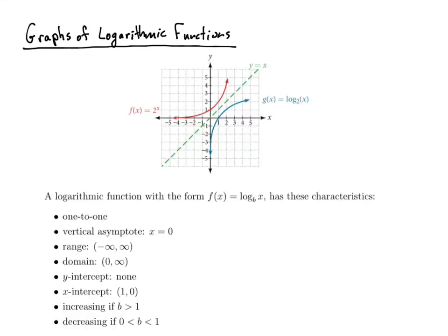In this video, I'll be going over the graphs of logarithmic functions. Our starting point is to realize that an exponential function and a logarithmic function are inverses of each other. That means they are reflected about the line y is equal to x. The y-intercept on an exponential function is (0, 1), but there is no y-intercept on a log function. Instead, we have an x-intercept at (1, 0). So the x and y values are swapped.